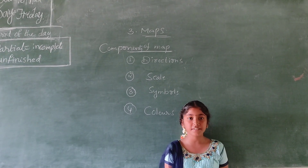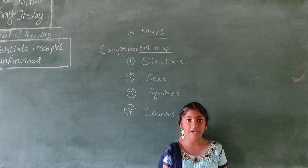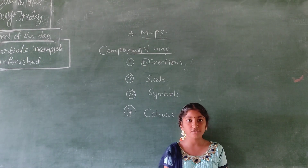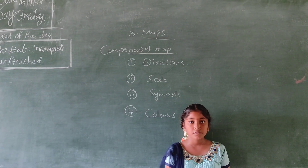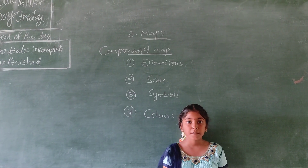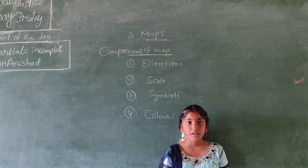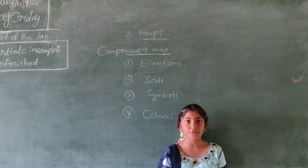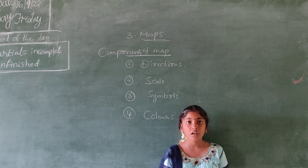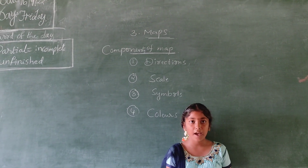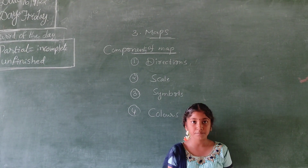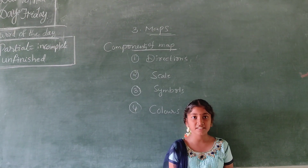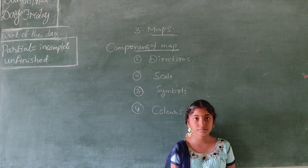A sketch is mainly based on memory and part observation. A rough drawing is drawn in symbols and scale. A map is a representation of whole area or a part of it. Maps have certain contents like directions, symbols, scales, etc.